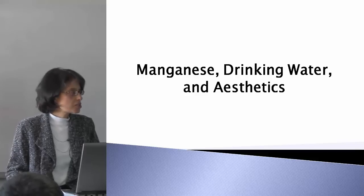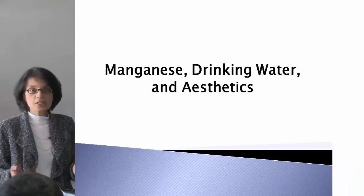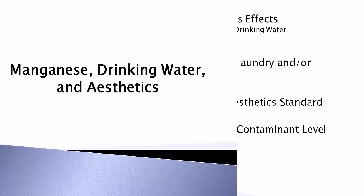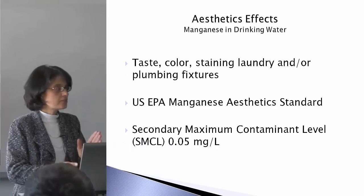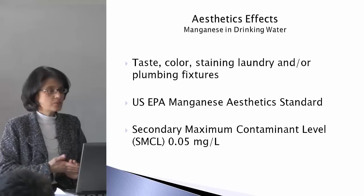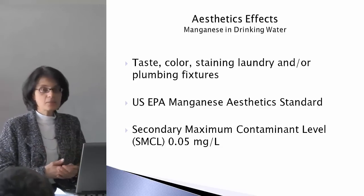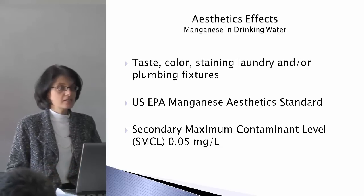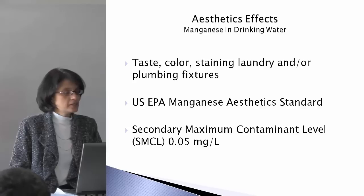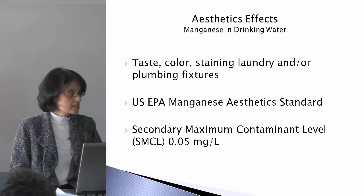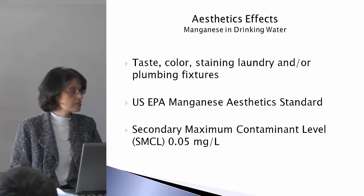Only in the case that there are a lot of consumer complaints, where you might have been asked as a public water supply to take corrective action. That's changed as of 2014. Everyone knows that if you exceed 0.05 mg per liter in your sample results, you might be getting some complaints on the taste, the color, the staining of laundry, or plumbing fixtures. The US EPA has set a secondary maximum contaminant level of 0.05 because of this reason.